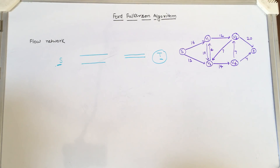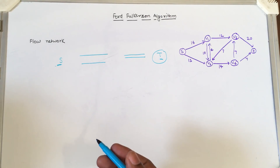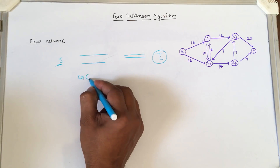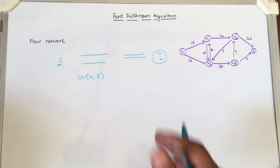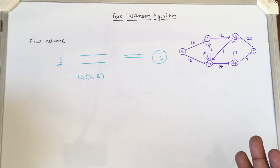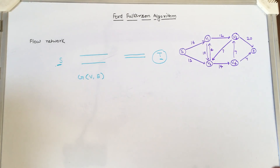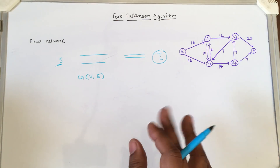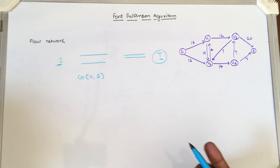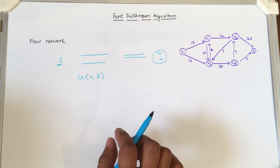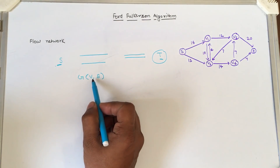For this maximum flow problem, we use a structure generally called a flow network. A flow network is defined as a directed graph in our data structure. We maintain the flow network as a directed graph with some vertices, which may represent cities or be mapped to other real-life applications such as electrical current through a wire.